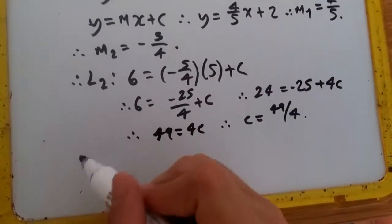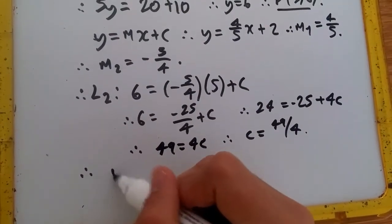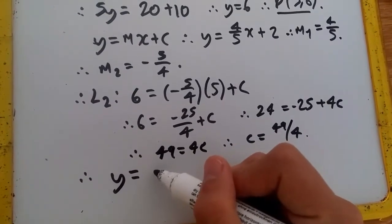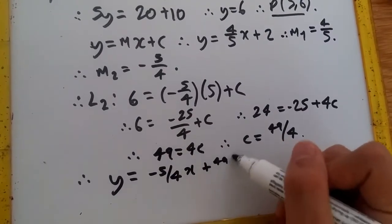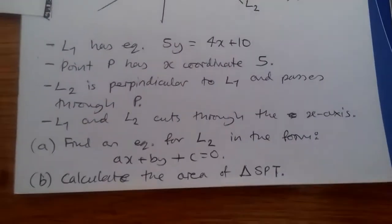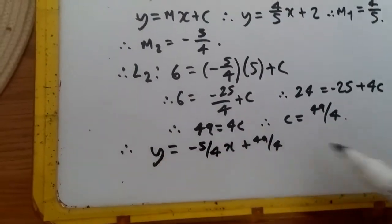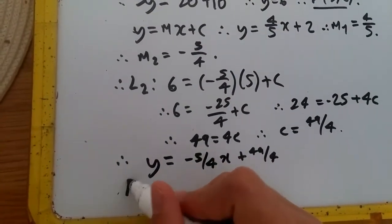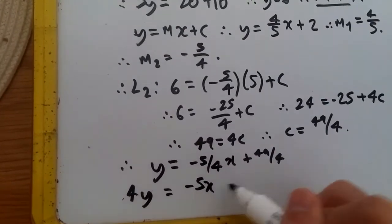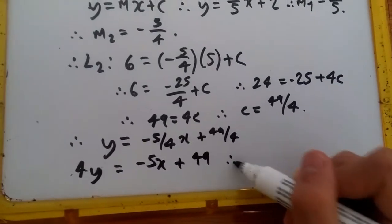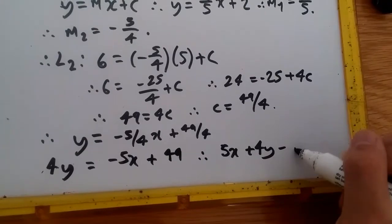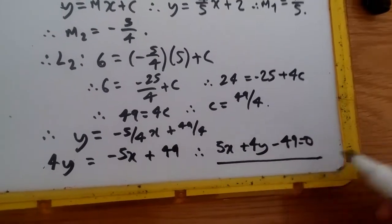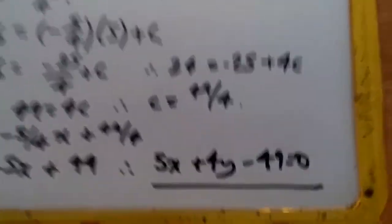Plugging everything back into the final equation y = Mx + C, we're replacing M and C. We have y = -5/4x + 49/4. Because they want it in the form Ax + By + C, we multiply 4 across. So we get 4y = -5x + 49, and putting everything on the left hand side, you get 5x + 4y - 49. And voila guys, here is your equation of L2.